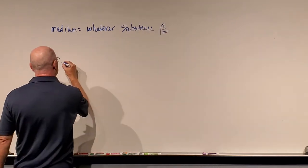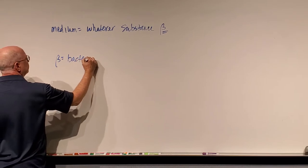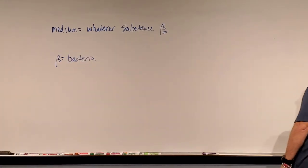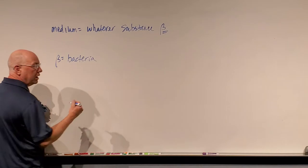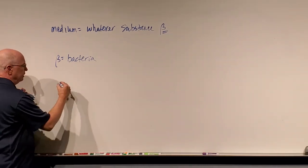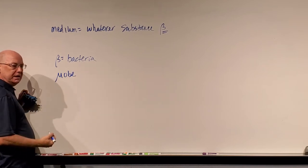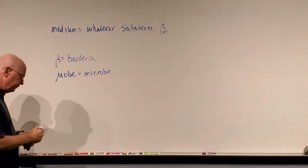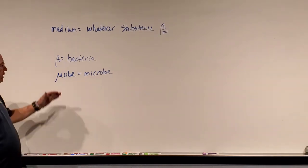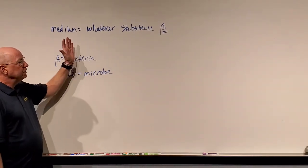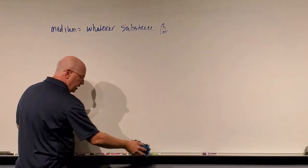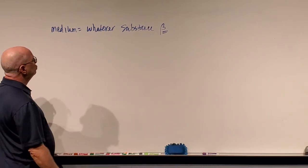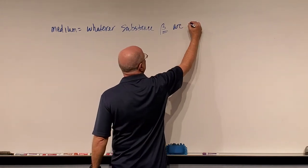This is going to be my abbreviation for bacteria — I'm going to use the beta symbol for bacteria, because I'm not going to write the word bacterium out every single time. I'm also going to use MU and OBE to stand for microbe. I literally came up with these as my own personal shorthand when I was taking notes from a professor, because I couldn't write fast enough, and we didn't use a lot of PowerPoint back then.